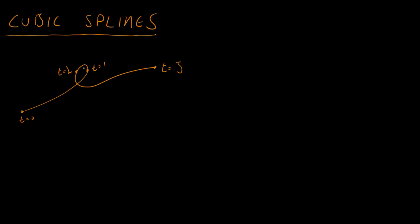When we left off, we have this curve that is a cubic spline — I'm going to call this curve Q. When we give it a value T, which represents time, it tells us where, say, a camera is at that time T. Cubic splines are commonly used for cameras.